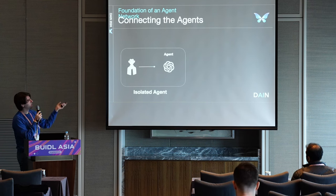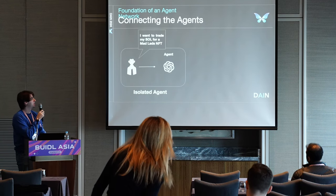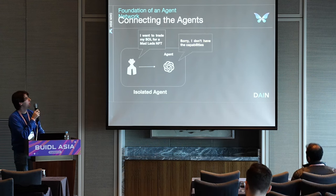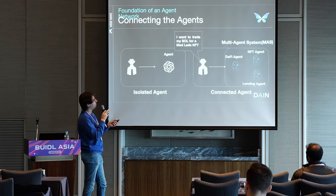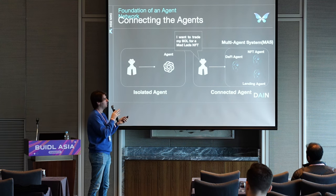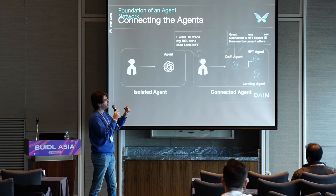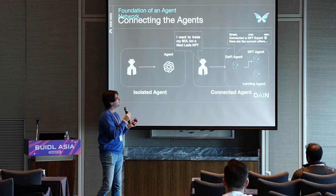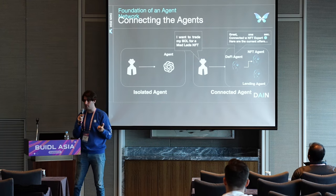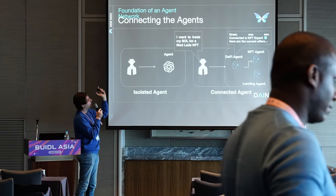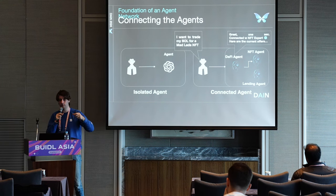In this example, a user interacts with ChatGPT — an isolated OpenAI agent — saying 'I want to trade my SOL for a Mad Lads NFT,' and the agent says 'sorry, I don't have the capabilities for that.' But if we have a multi-agent system, one can specialize in DeFi, the other in NFTs, and the other in lending. Then they can achieve it, because the DeFi agent can connect with an NFT agent — they can specialize in specific functions and more. Thanks to that, they can get connected and complete the user's objective. This is an easy example: a user wanting to buy an NFT connects with another agent that has the resources to do that. That's a multi-agent system.